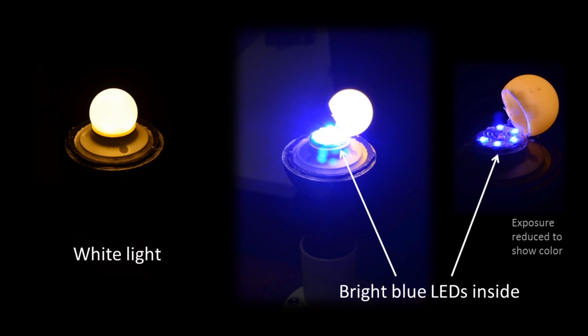When the blue light shines on the phosphor some of it is absorbed and the light that's given out from the phosphor is of different colours.